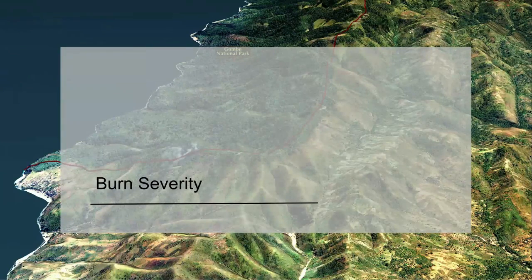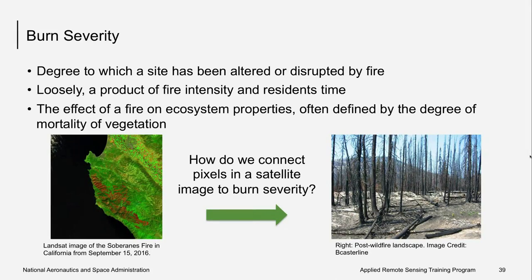Next we'll discuss burn severity, which is another type of factor you can look at when developing your models. Burn severity is the effect of a fire on ecosystem properties, often defined by the degree of mortality in vegetation. It's the degree to which a site has been altered or disrupted by fire, and is loosely the product of fire intensity and residence time. Fire intensity is the amount of energy or heat released per unit time or area, and the residence time is how long the fire burns. Fires can drastically affect ecosystems and can be used as an input to scenario models.